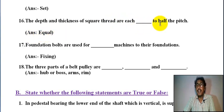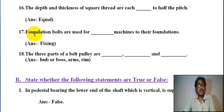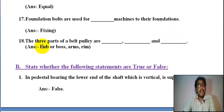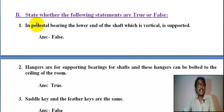Number seventeen: foundation bolt are used for fixing machines to their foundation. Number eighteen: the three major parts of a belt pulley are hub or boss, arms, and rim.